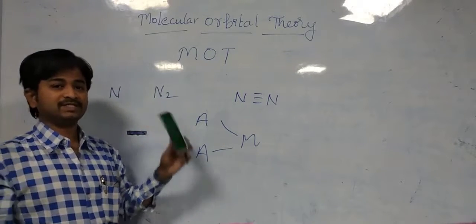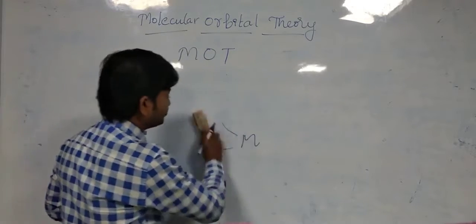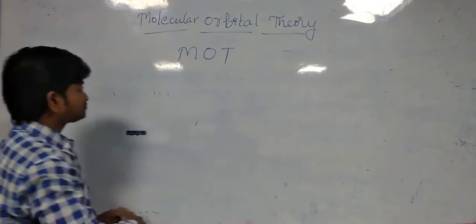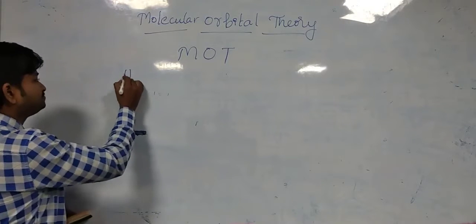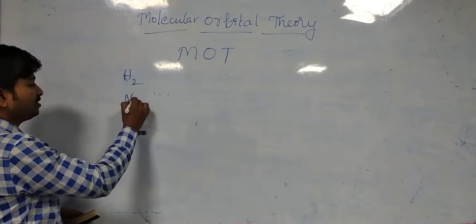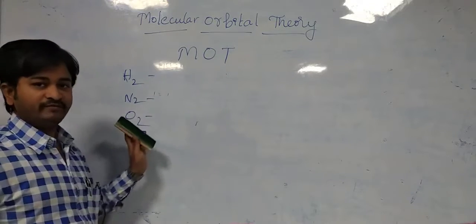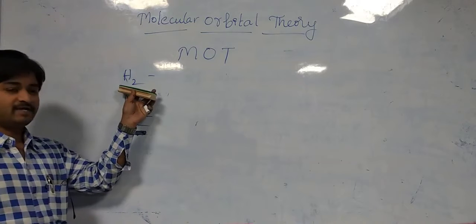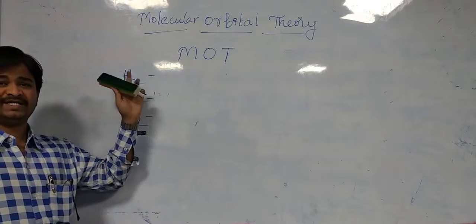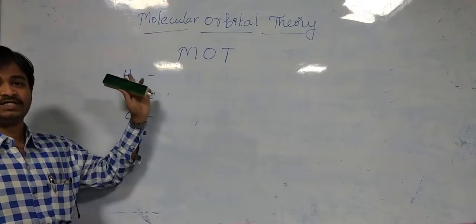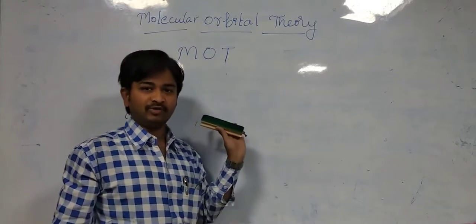For easy understanding, I am first explaining about hydrogen. I am going to discuss three molecules: hydrogen H2, nitrogen N2, and oxygen O2. Hydrogen is a small molecule — it is easy to understand, so that you can study N2 and O2 molecules as well.